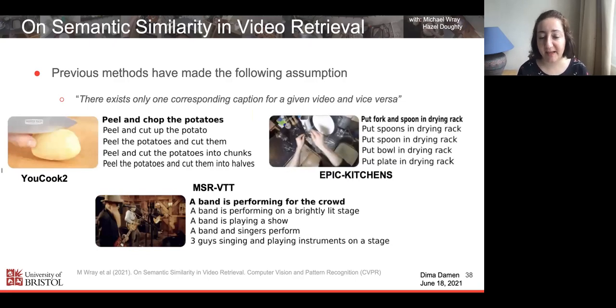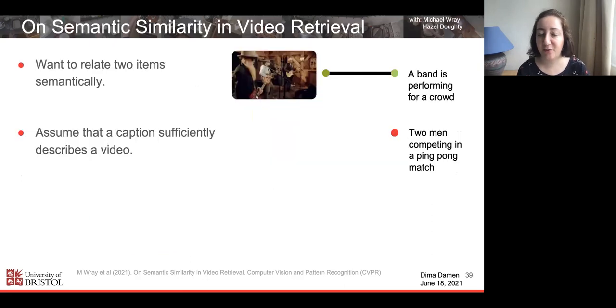This assumption that there exists only one corresponding caption in the retrieved sentences is invalid for many datasets we looked at. For example, the MSR-VTT dataset, very popular in video retrieval. You'd see this video on the right. The ground truth is a band is performing for the crowd. Indeed, in my opinion, the last sentence, three guys singing and playing, is actually more relevant because there are no crowds appearing in this video. But if a method retrieves the last sentence as the top sentence, it will be penalized because that's not the ground truth. So the question is, how can we improve this for these large-scale datasets without having to label every relationship between a video and a caption? Because that's very expensive.